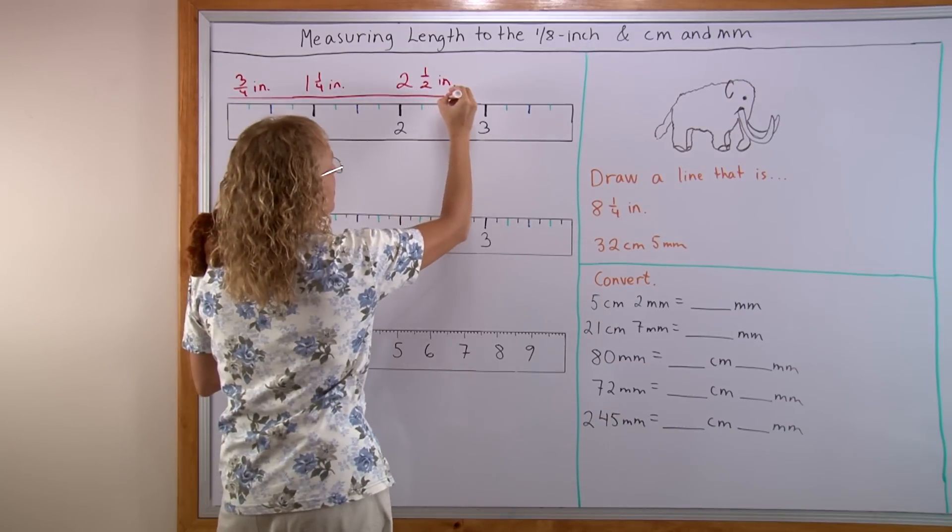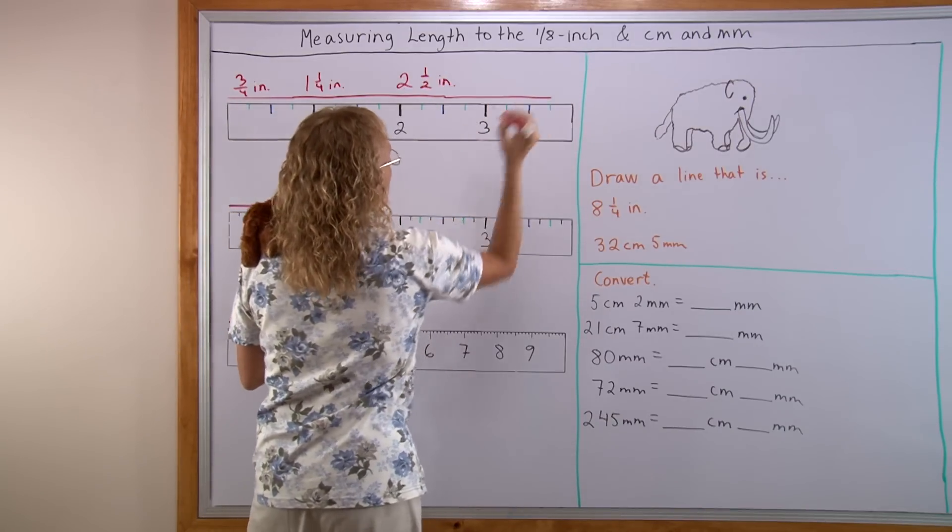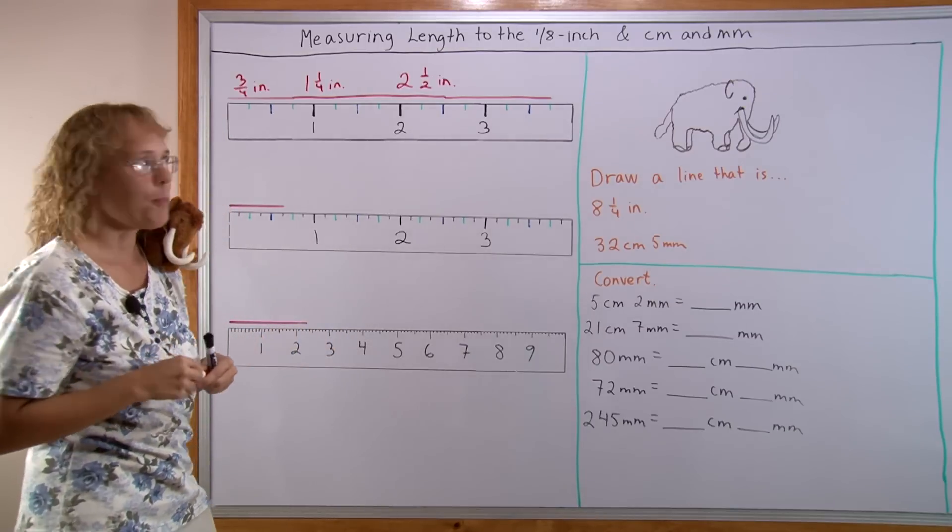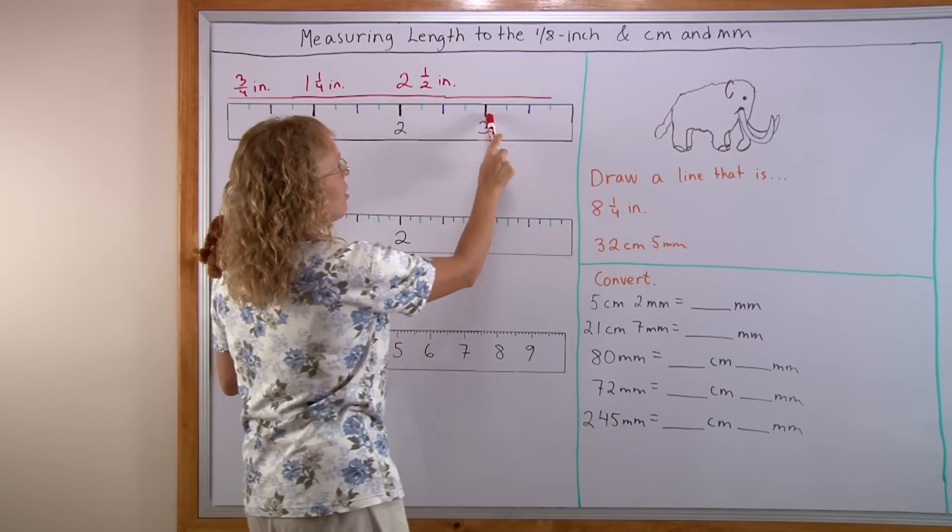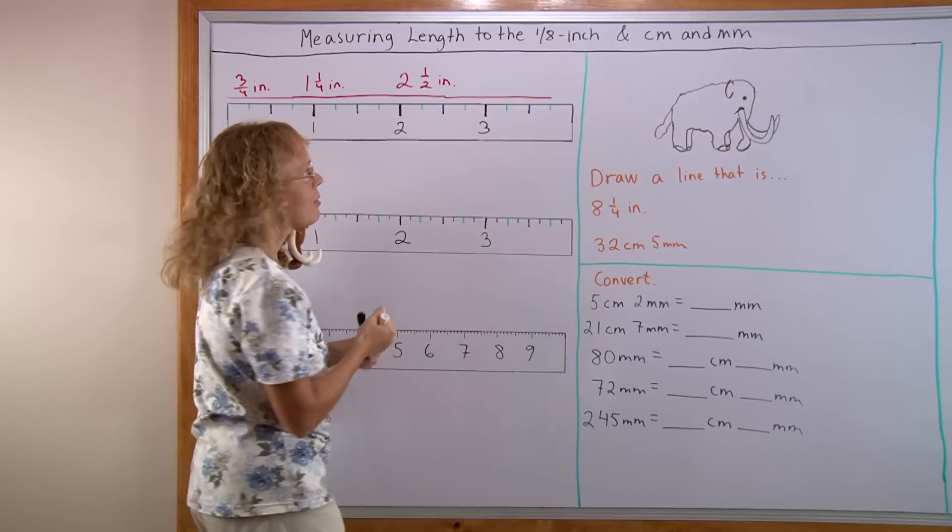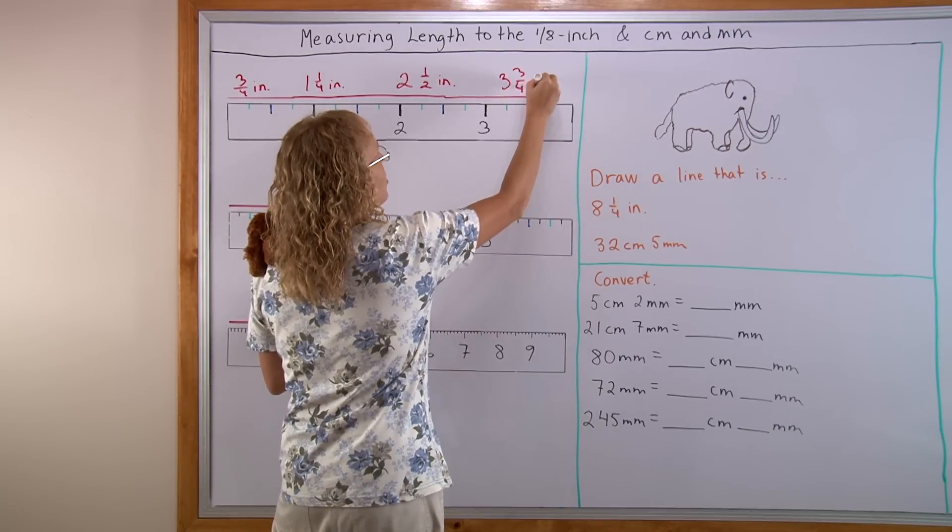One more. Over there. How long is it now? We would have 3 inches and then over here 3/4, right? 3 and 3/4 inches.